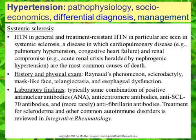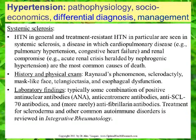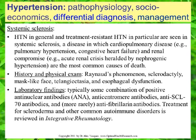Hypertension in general and treatment-resistant hypertension in particular are seen in systemic sclerosis, a disease in which cardiopulmonary disease — specifically pulmonary hypertension, congestive heart failure, and renal compromise including acute renal crisis — are the most common causes of death. History and physical exam could reveal clues such as Raynaud's phenomenon, sclerodactyly, mask-like face, telangiectasia, and esophageal dysfunction.